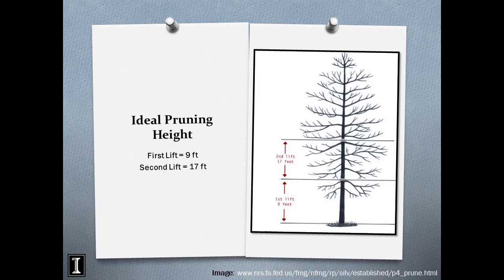Ideal pruning height depends on the tree. For the first lift, prune to 9 feet — not removing more than 50% of the canopy. Then do a second lift two or three years down the road. You will prune in series over the course of multiple years. Don't think you have to get it all done in one year — spread it out. The minimum saw log length is 9 feet, so prune up to 9 feet minimum. If you're going to invest your time, shoot for that 8 to 9 feet.